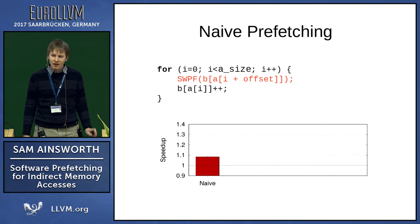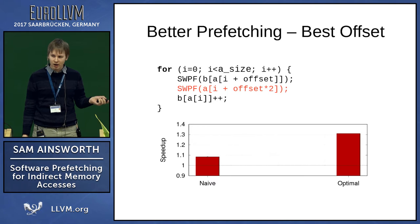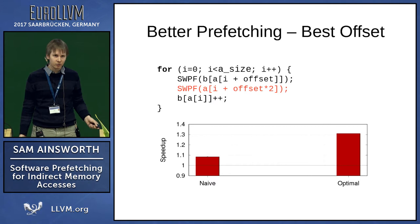However, if we also insert a software prefetch for the stride access and stagger all of those accesses so that we only ever access something that has been prefetched in the past, we get a lot better performance improvement — 1.3x. And this is even though there is a hardware stride prefetch in this system. This is an out-of-order superscalar Intel Haswell system, so it's got a decent stride prefetch. But for these kinds of accesses, you still need to prefetch the stride access in software.